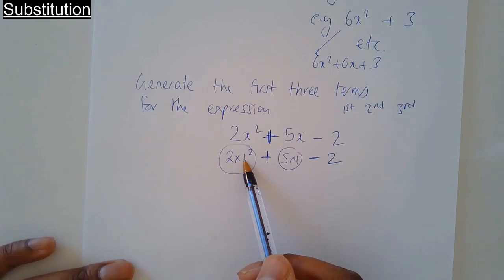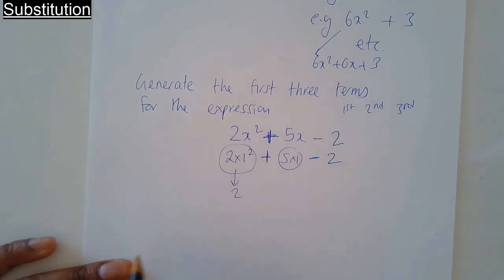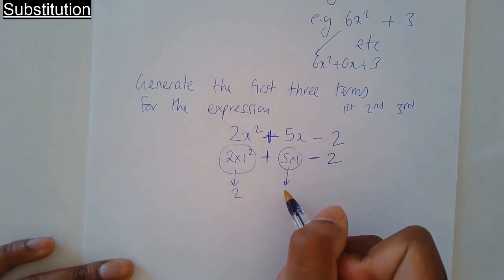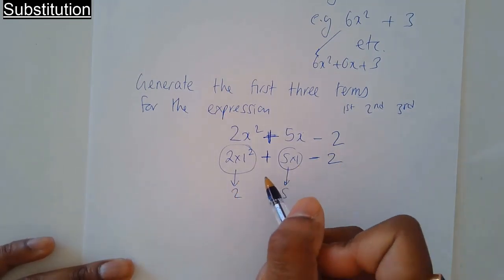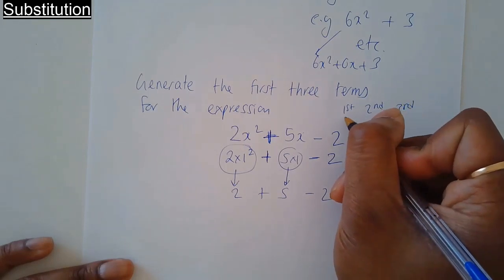So, 1 squared is 1 times 2 is 2. 5 times 1 is 5. 2 plus 5 is 7, 7 take 2 is 5. The first one is 5.